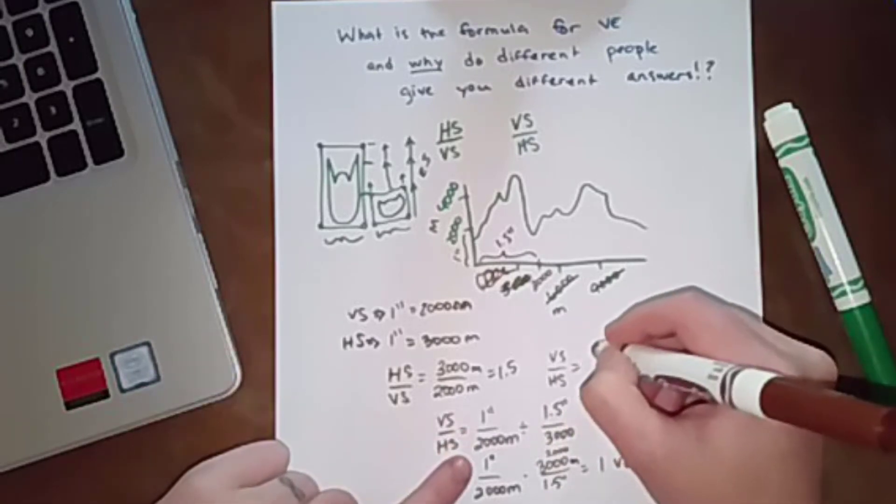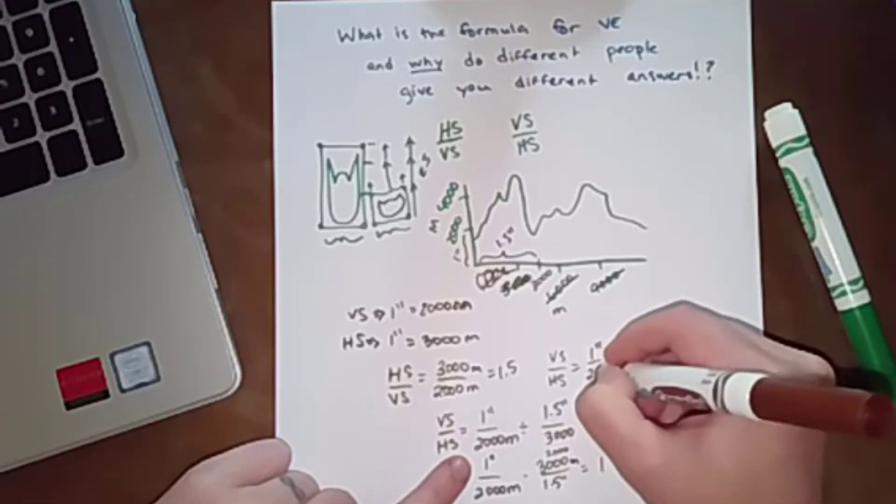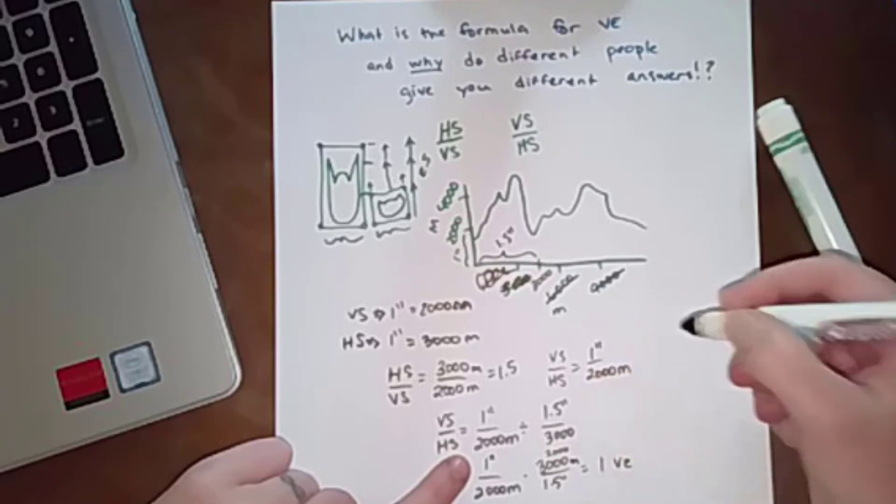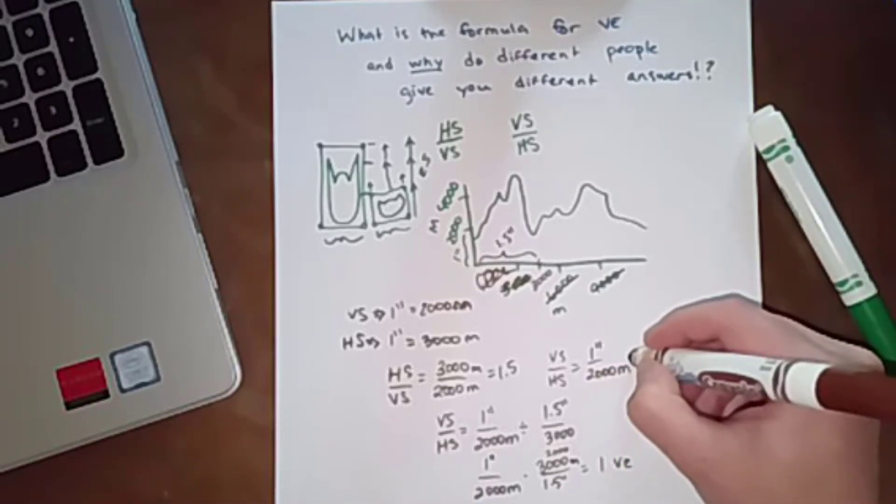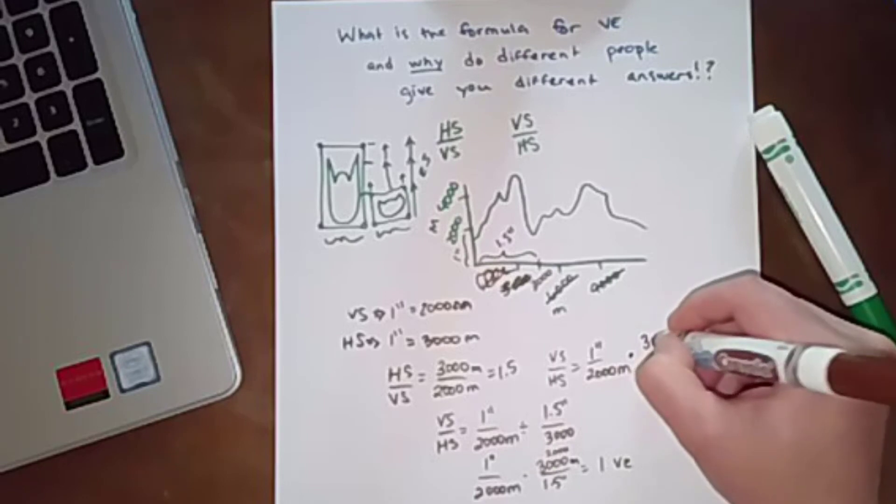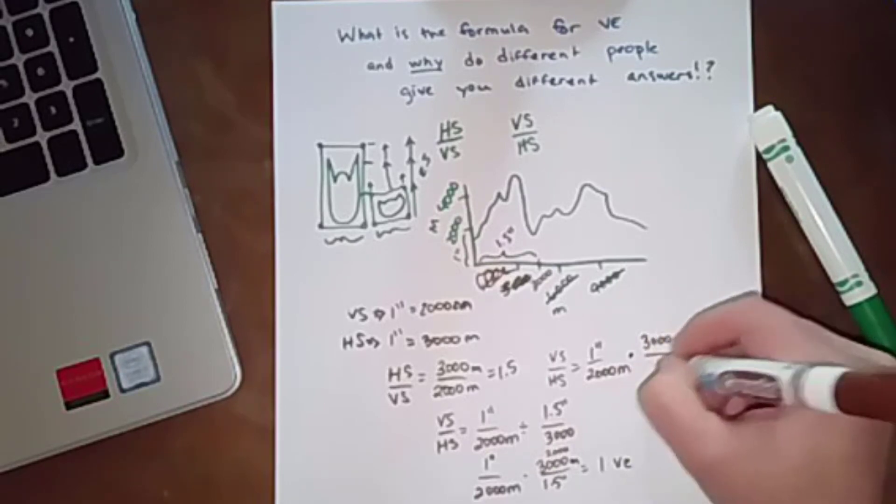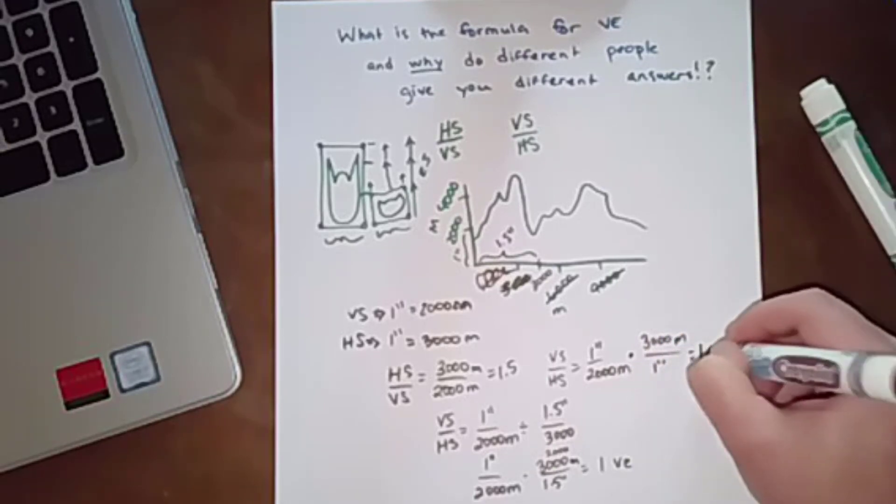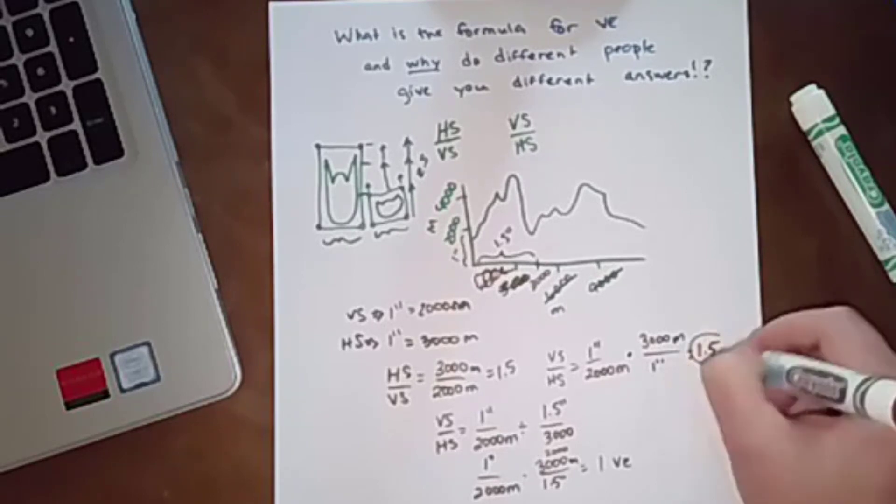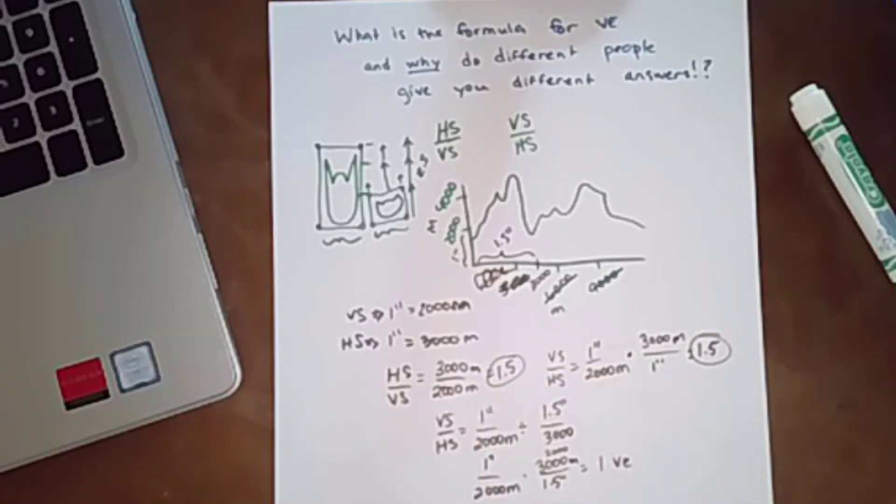vertical scale is 1 inch divided by 2,000 meters, and again we're going to flip and multiply. 3,000 meters divided by 1 inch is 1.5, so you get the same thing either way.